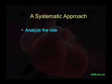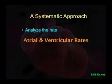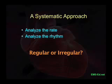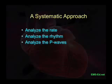Our approach to EKG interpretation should always be a systematic one. We should consider and analyze the rate — the rate of the atria, the rate of the ventricles. Analyze the rhythm: is it regular, regularly irregular, or irregularly irregular? Analyze the P waves: are there P waves? Do we have a P wave for every QRS complex? Do we have a QRS for every P wave?